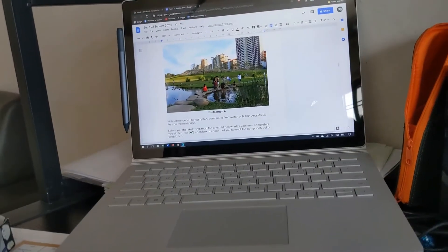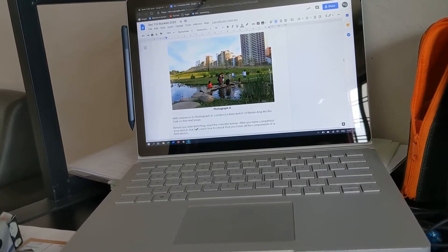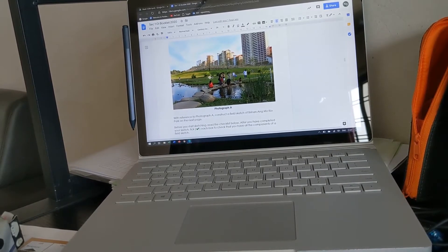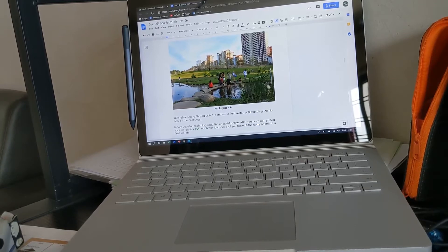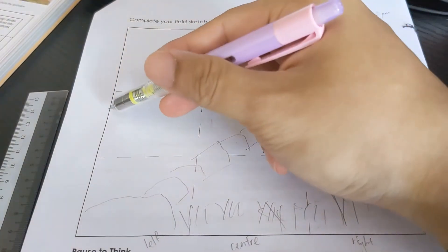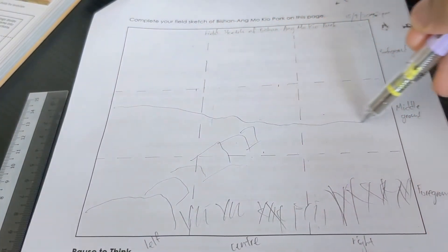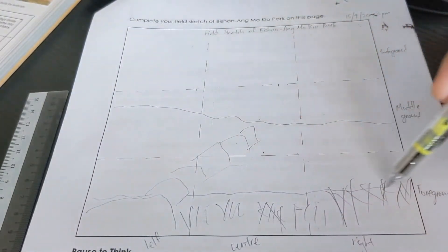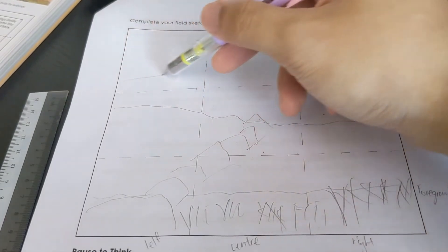Now in the middle ground, I see more of the river as well as the further banks, which is a grass patch. So I can draw my river. And then I'll draw my grass patch.